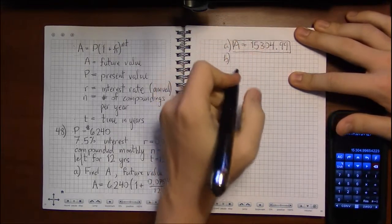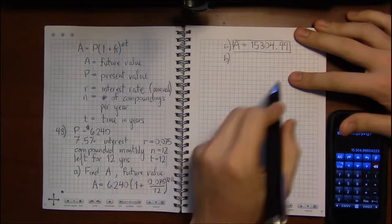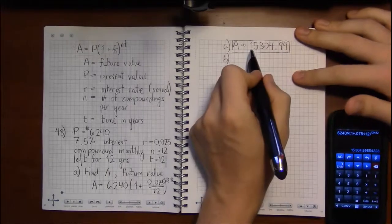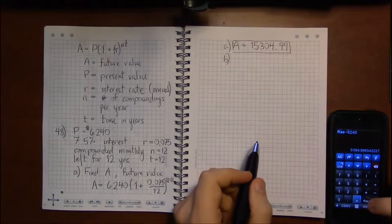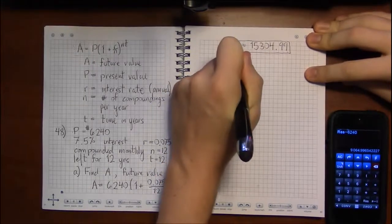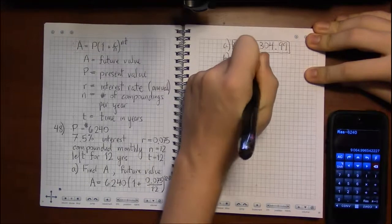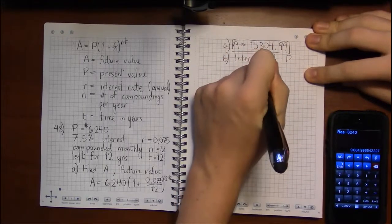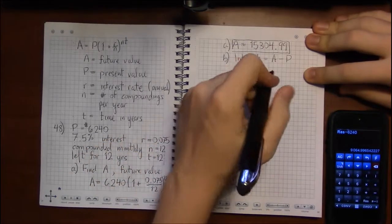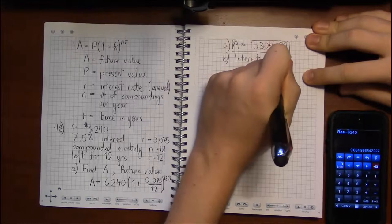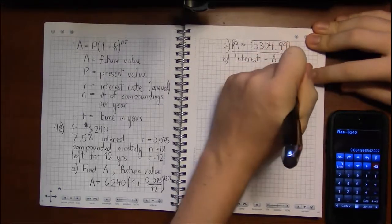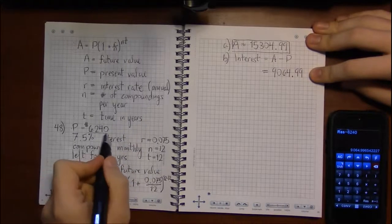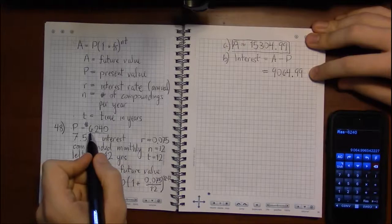Part B, how much interest did this earn? Well, what's the difference? How much should we gain from starting at 6,240 to getting to this final amount? Well, the interest that we earned is just going to be A minus P, the future value minus the present value. So leaving this for 12 years, we will have gained $9,064.99. So we will have more than doubled our original amount if we leave it there for 12 years.